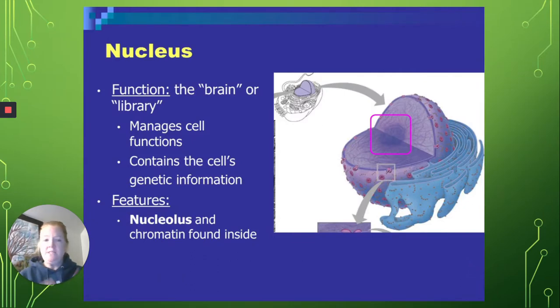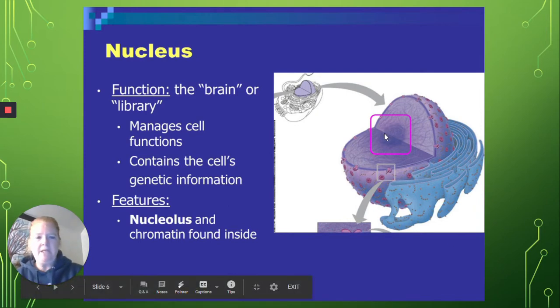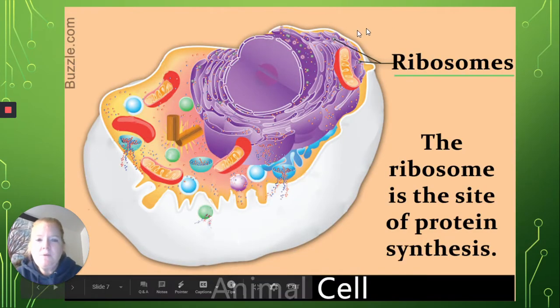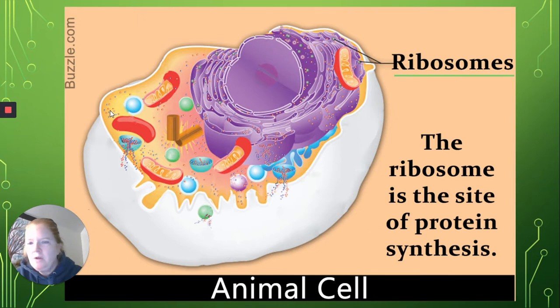Okay, so the nucleus, again, very large in the center of the cell, can be considered the brain of the cell. Inside the nucleus is found another structure called the nucleolus. And the ribosomes, you can see them as tiny dots here on the ER, or endoplasmic reticulum, but you can also see all around in the cytoplasm more of these ribosomes.